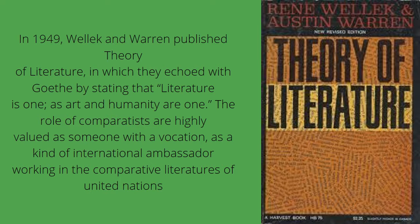Then we come to a work that got fame in 1949, written by Wellek and Warren. Wellek and Warren published the Theory of Literature, in which they echoed Goethe's statement. What they say is: literature is one, as art and humanity are one. They view the whole literature of the world as actually one body of literature, and we cannot bifurcate one literature from the other. They say that the role of comparatists is highly valued — as someone with a vocation as a kind of international ambassador working like the diplomats of the United Nations.